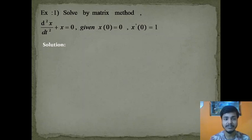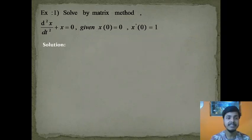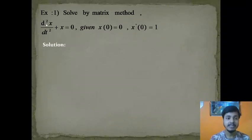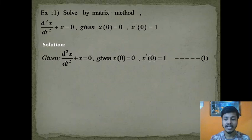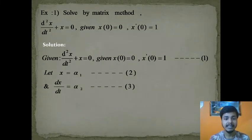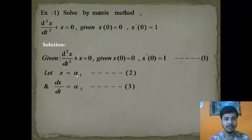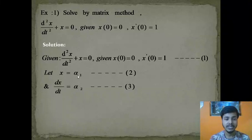The first step of the working rule says: write down the matrix form for the given equation. We have the equation d²x/dt² + x = 0. To write this in matrix form, we first convert this second-order equation into two first-order equations. For that we use the substitution: let x = α₁ and dx/dt = α₂.